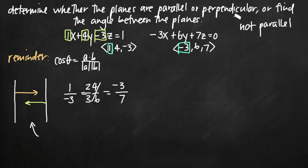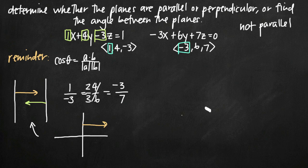Since my planes aren't parallel, I need to test whether they're perpendicular. The same logic follows: if I have perpendicular planes, their normal vectors are perpendicular as well. The way to test for vectors being perpendicular is to take the dot product. I have my two vectors (1, 4, -3) and (-3, 6, 7), and I want to take the dot product.